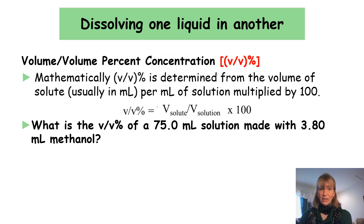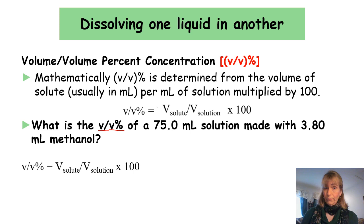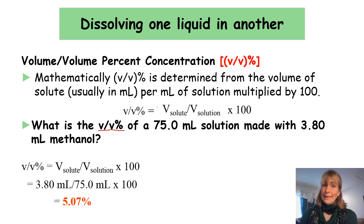Example: what is the volume-volume percent of a 75 mL solution made with 3.8 mL of methanol? Using the equation % v/v = (volume of solute ÷ volume of solution) × 100: the solution volume is 75 mL (denominator) and the solute methanol is 3.80 mL. Plugging in and multiplying by 100 gives 5.07%. Since it's a ratio between two volumes, it can also be used as a conversion factor if necessary.